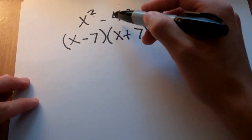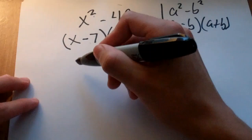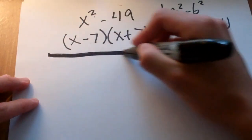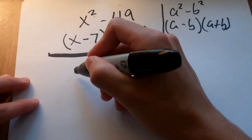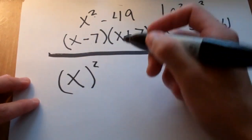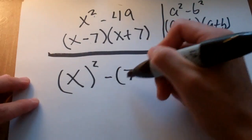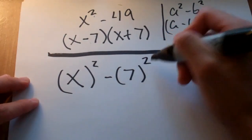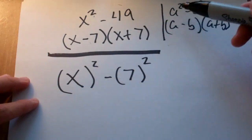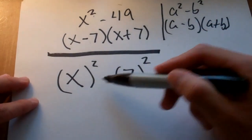If this is a, and this is b, then I can look at it like this. I can say, x squared minus 7 squared. So, clearly, we can see that this is a, in this case, and this is b.